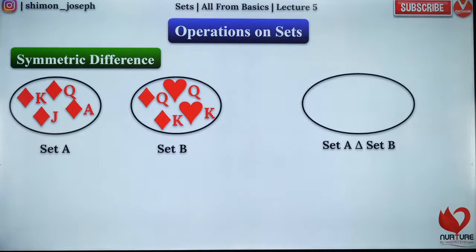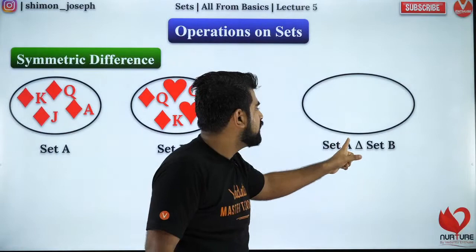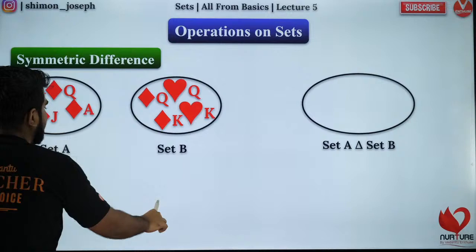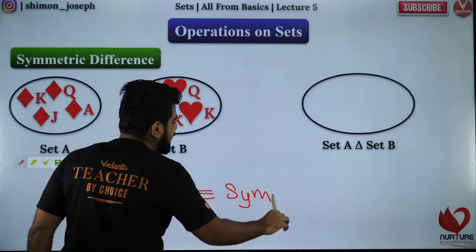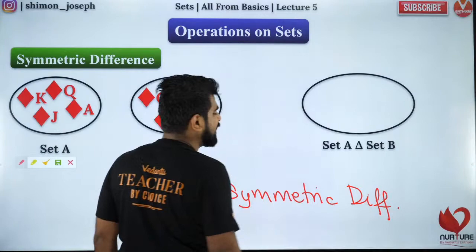The first topic is symmetric difference. What do you think will be set A symmetric difference set B? This is a symbol used for symmetric difference — it is nothing but delta. Delta is the symbol I will use for representing symmetric difference. Symmetric difference means: whatever elements are in A but not in B, and also whatever elements are in B but not in A.